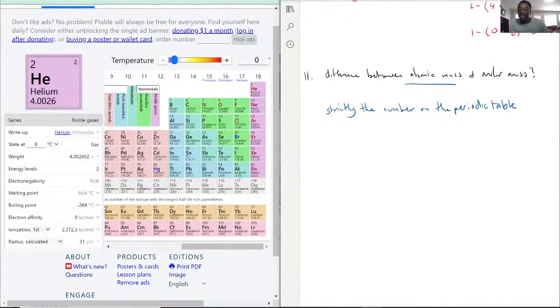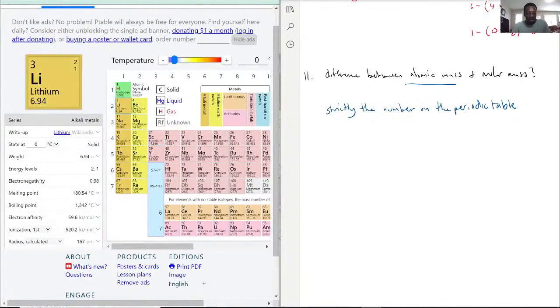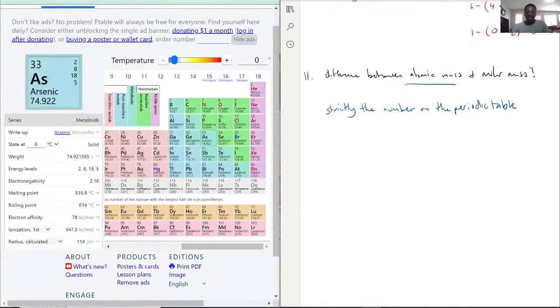With that being said, the atomic mass, if you look at the periodic table, when they give you the atomic mass units, it's right here at the bottom. Lithium, atomic mass of 6.94, beryllium 9.0122, oxygen atomic mass 15.999. That is what atomic mass means.